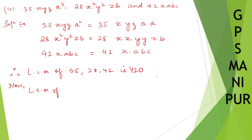Now, LCM of the given polynomials - let me write down what are those. First, 35 x y z a², 28 x² y² z b,